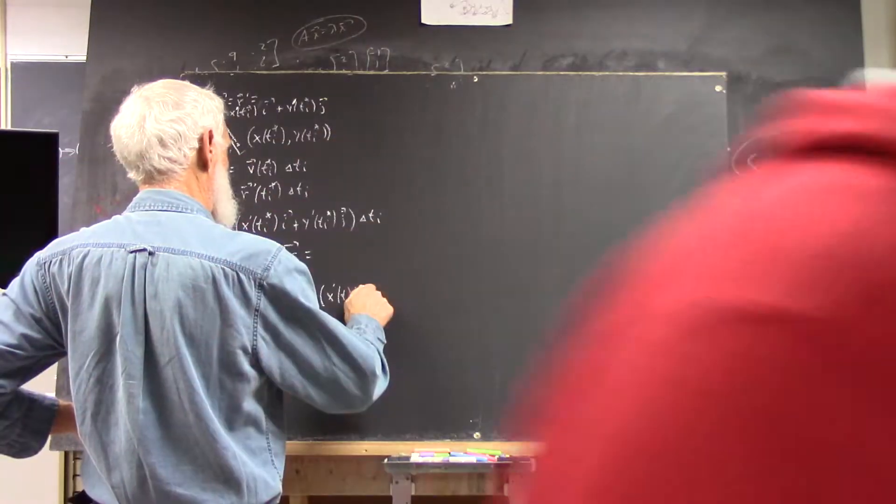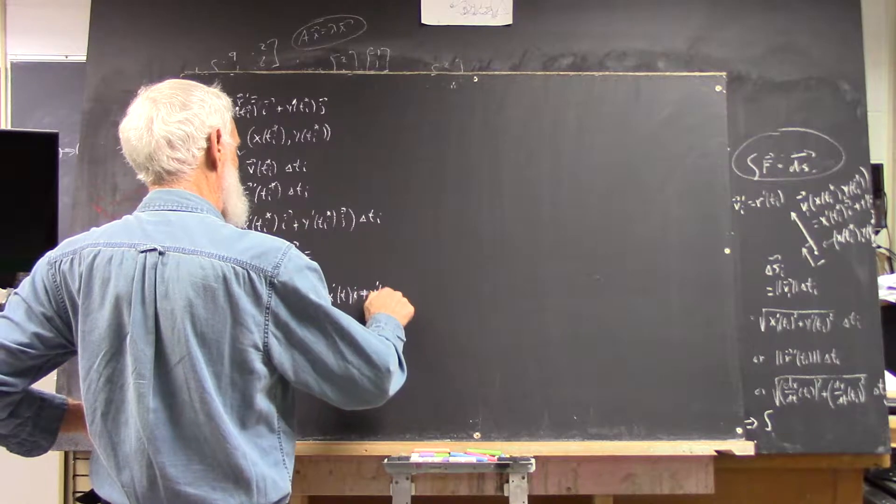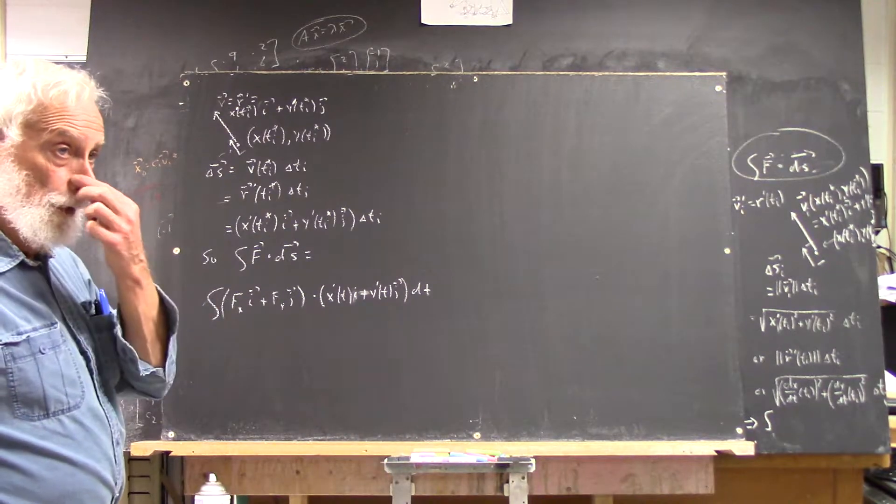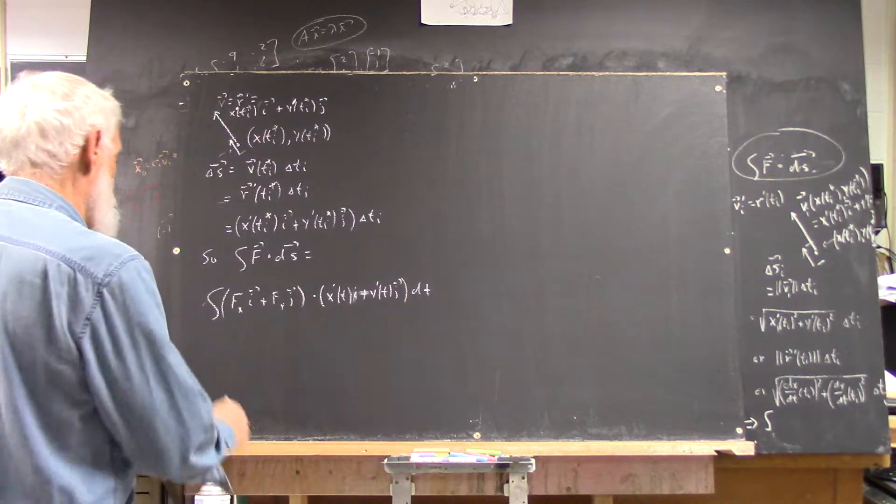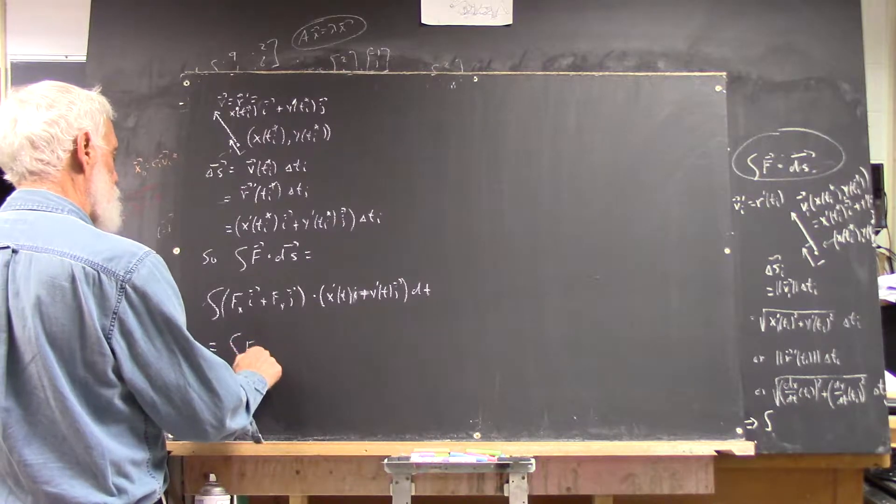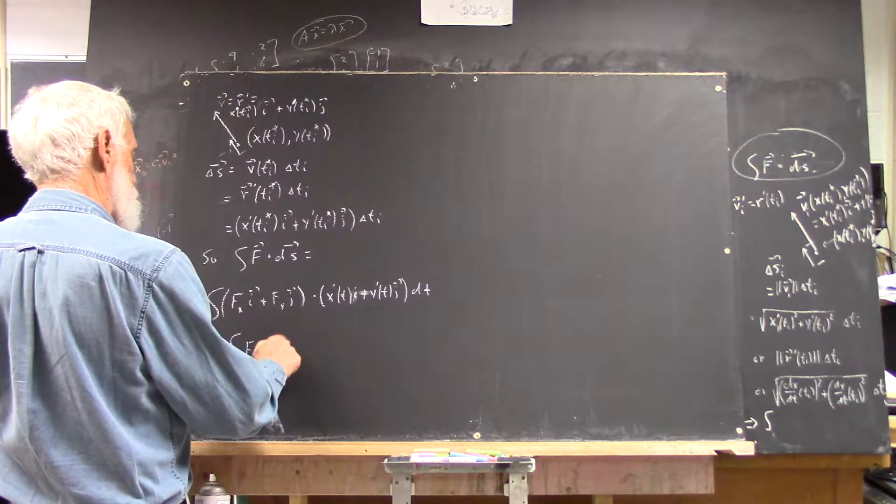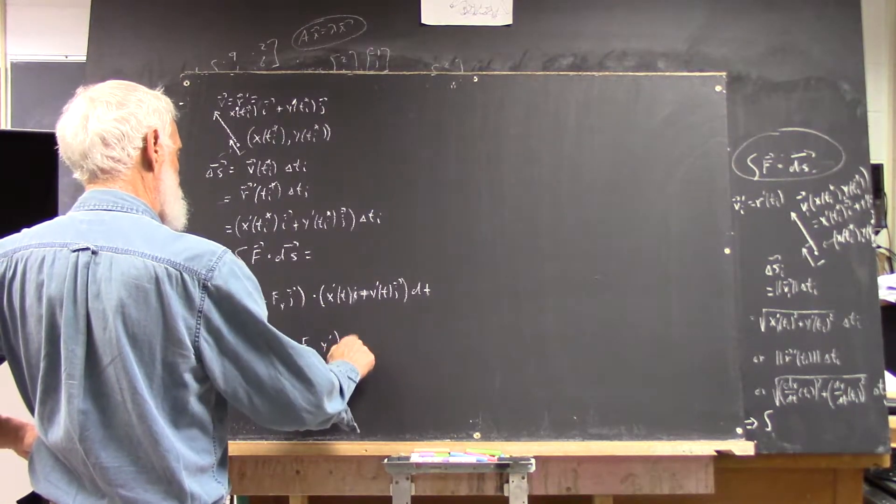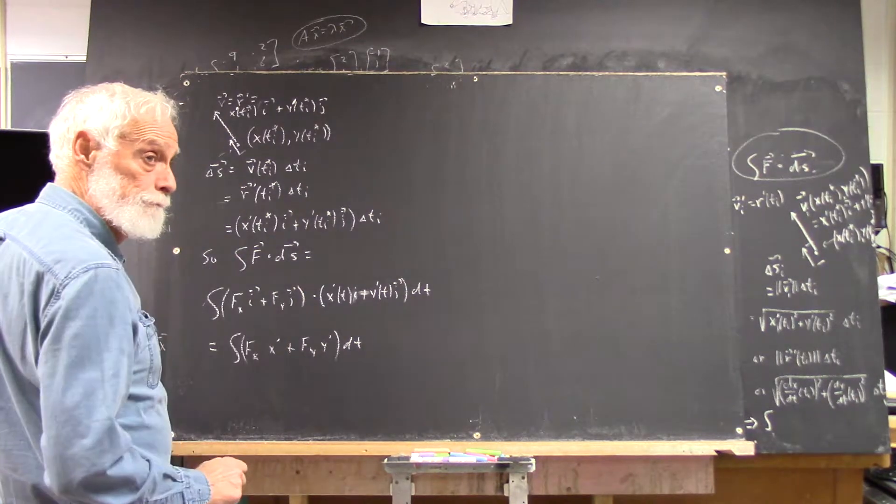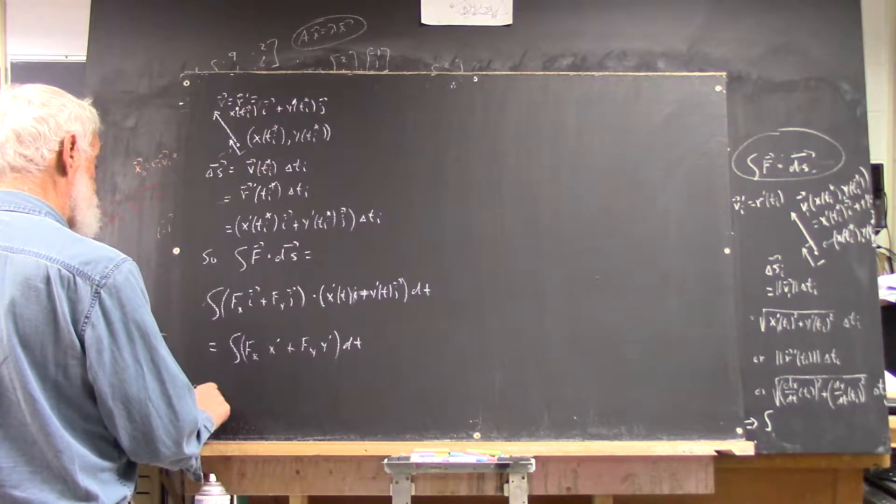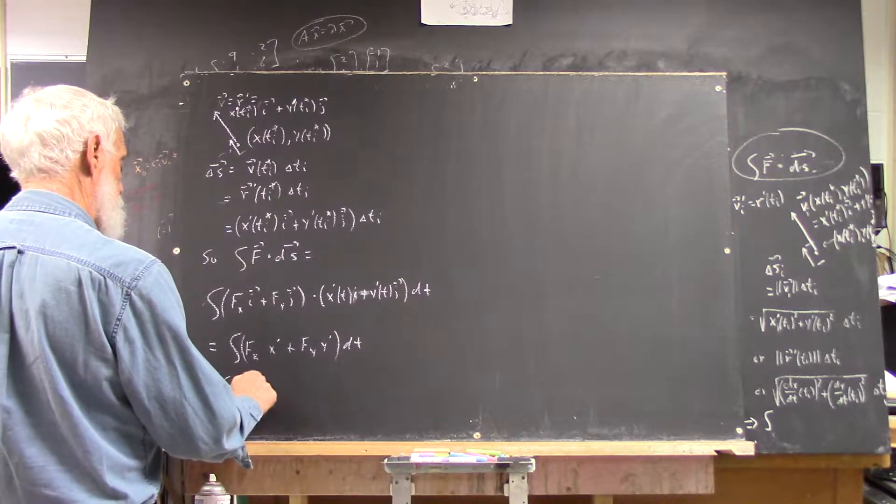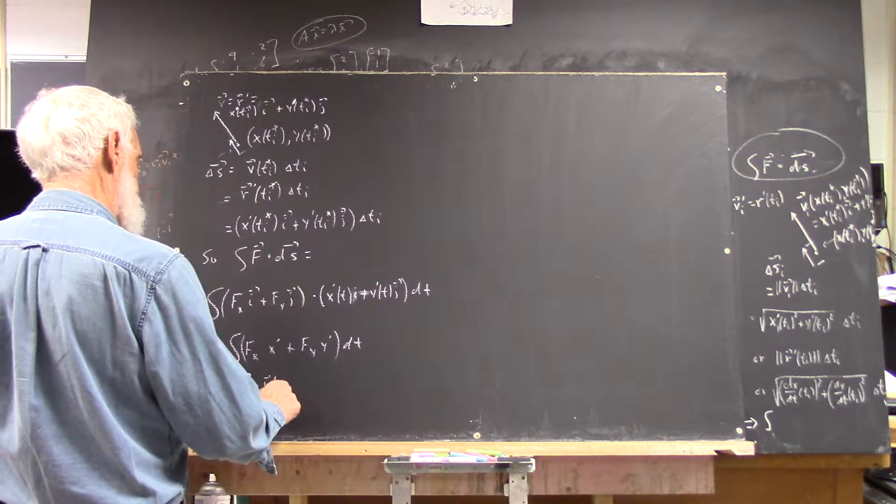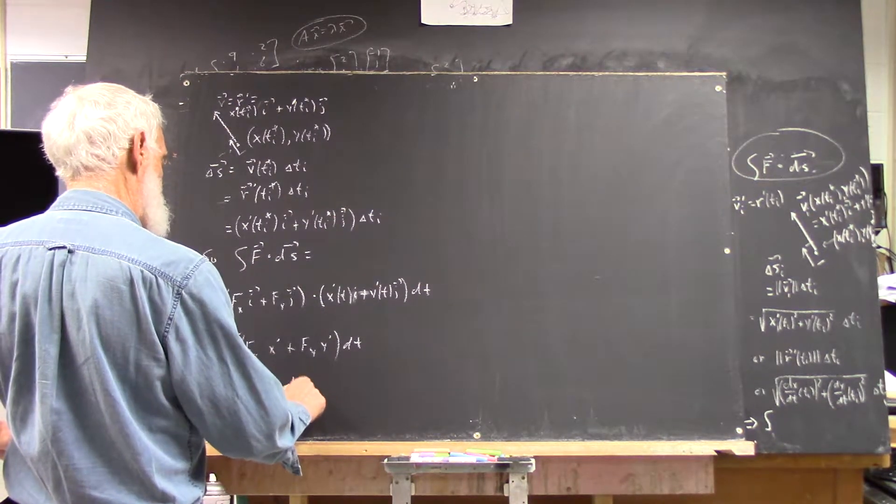And it becomes this, which becomes the integral of fx times x prime plus fy times y prime dt. It could also be written as the integral of f dot r prime dt.